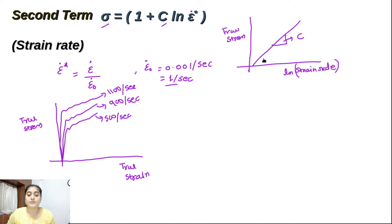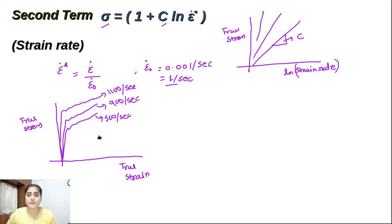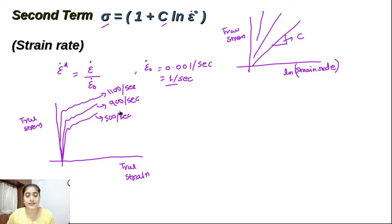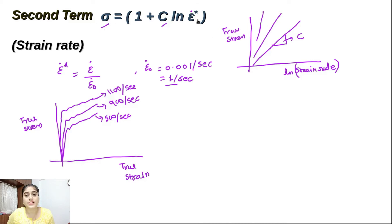By defining the C value, we can show the effect of strain rate over the range of interest — for example, 500 to 1500 strain rate for an impact scenario. You do experiments at different strain rates, find the true stress versus true strain graphs, and calculate the C value, which gives you the effect on flow stress due to strain rate changes.